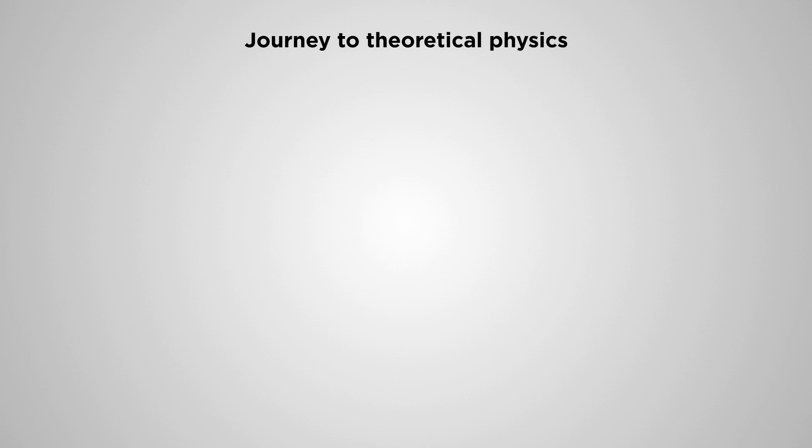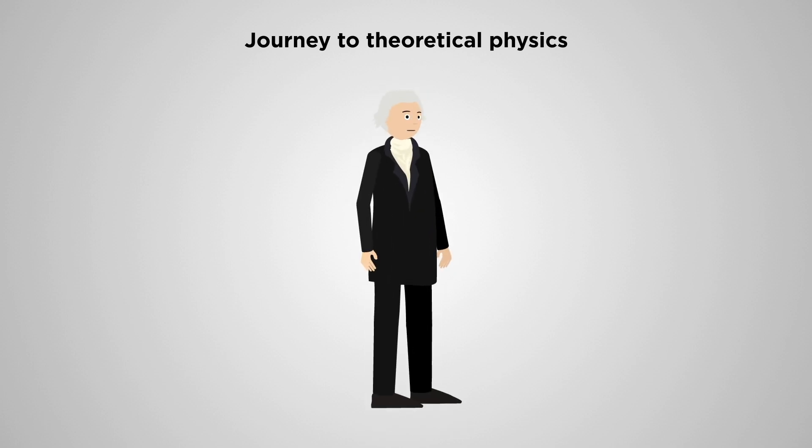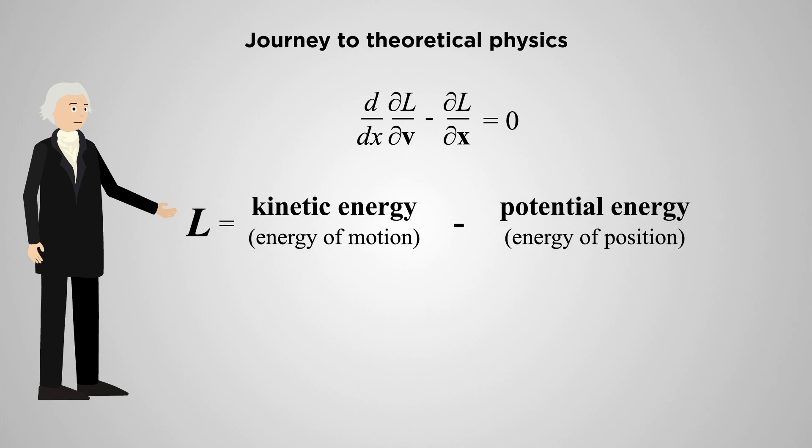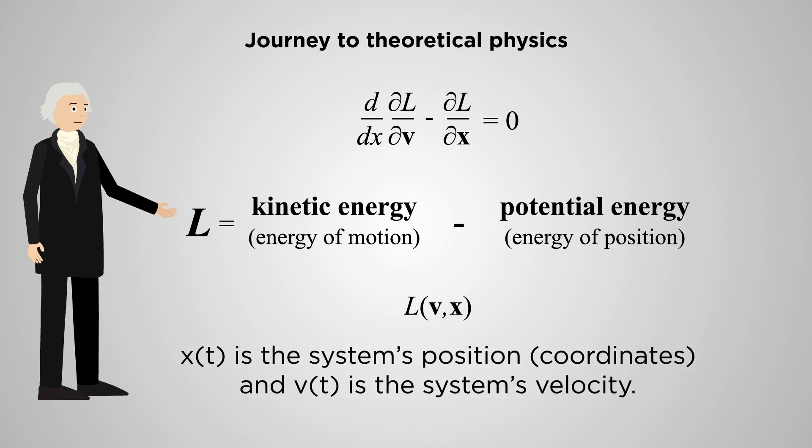In the late 18th century, Giuseppe Ludovico de Lagrange Tournier introduced the general equations of motion for physical systems, the Lagrangian equations, together with the Lagrangian, a function of a system's position and velocity.